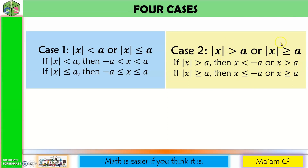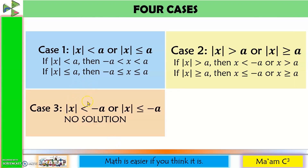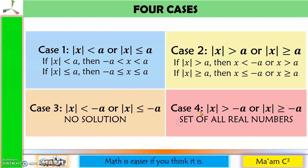Greater than may be replaced with greater than or equal to. Case 3: if the absolute value of x is less than a negative number, there is no solution, because no absolute value is less than or equal to a negative number. Case 4: if the absolute value of x is greater than a negative number, the solution set is the set of all real numbers, because the absolute value of a number is always greater than a negative number. Greater than may be replaced with greater than or equal to.